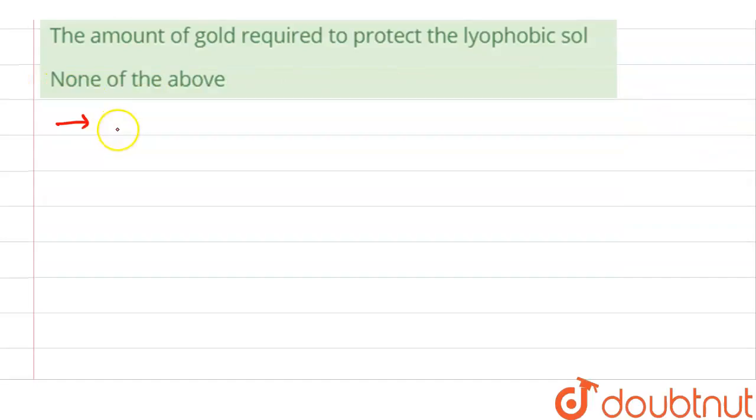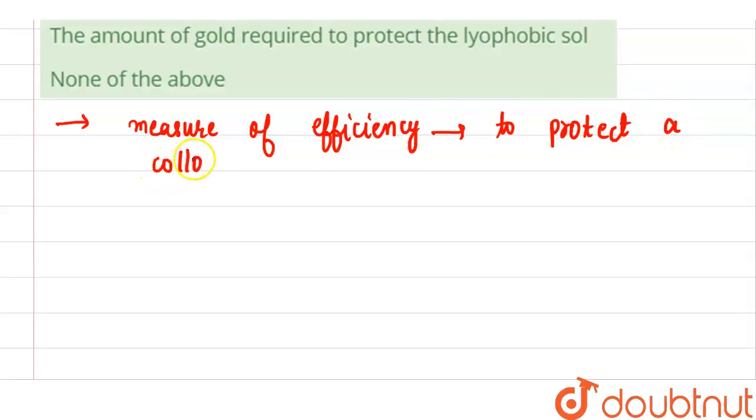Let us see first what is gold number. Gold number is the measure of efficiency to protect a colloidal solution. If the gold number value is smaller, then higher the protecting power of the colloid.